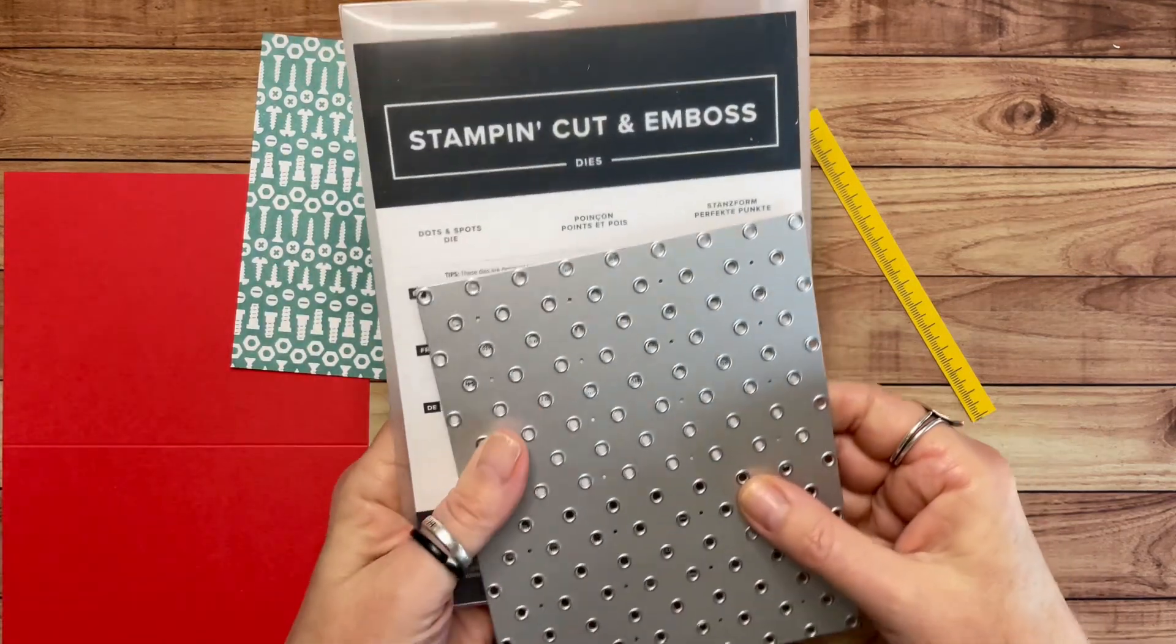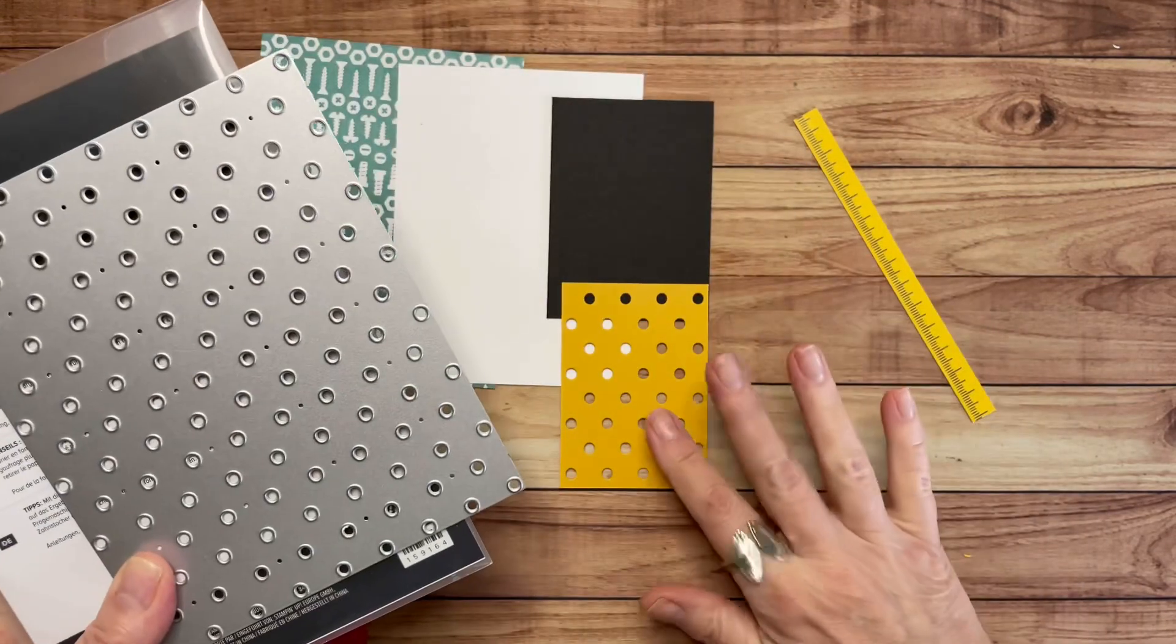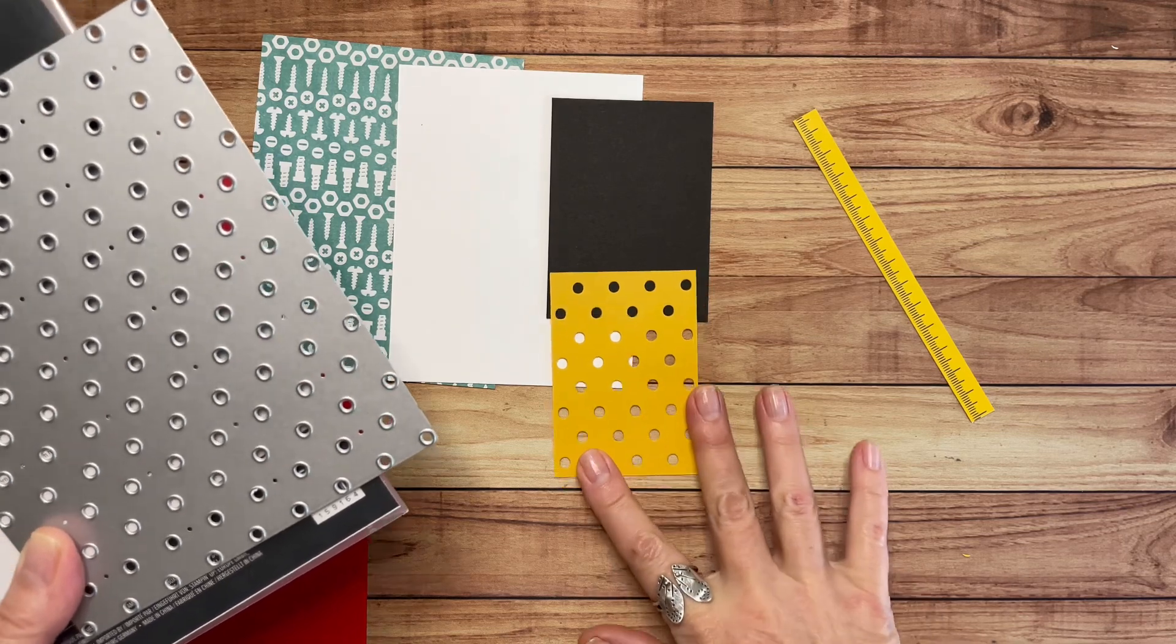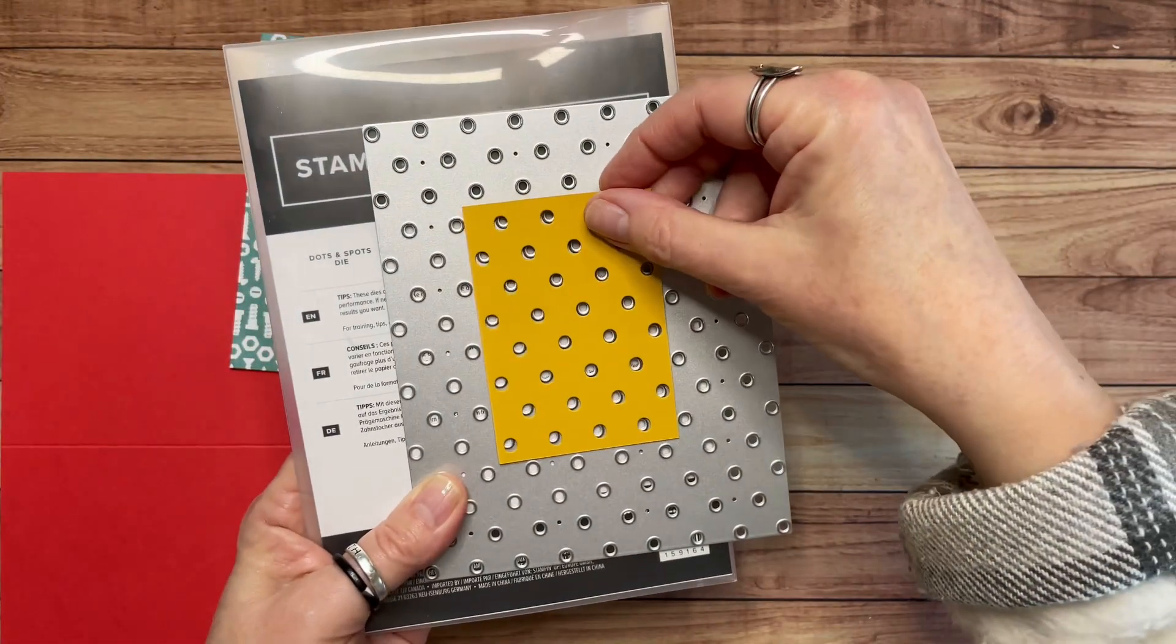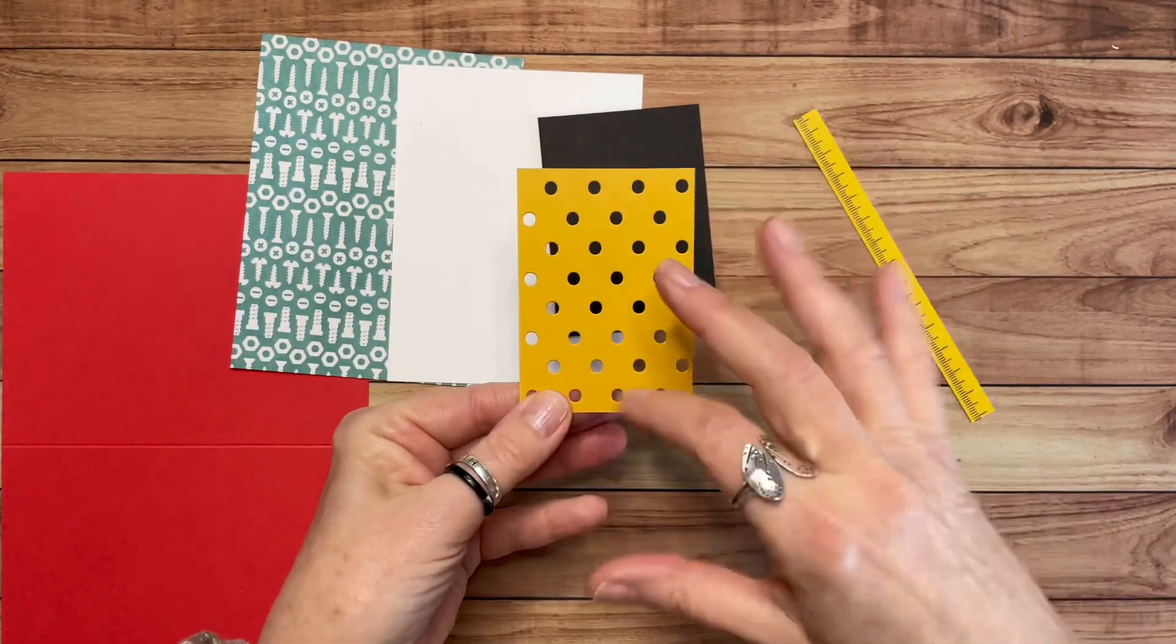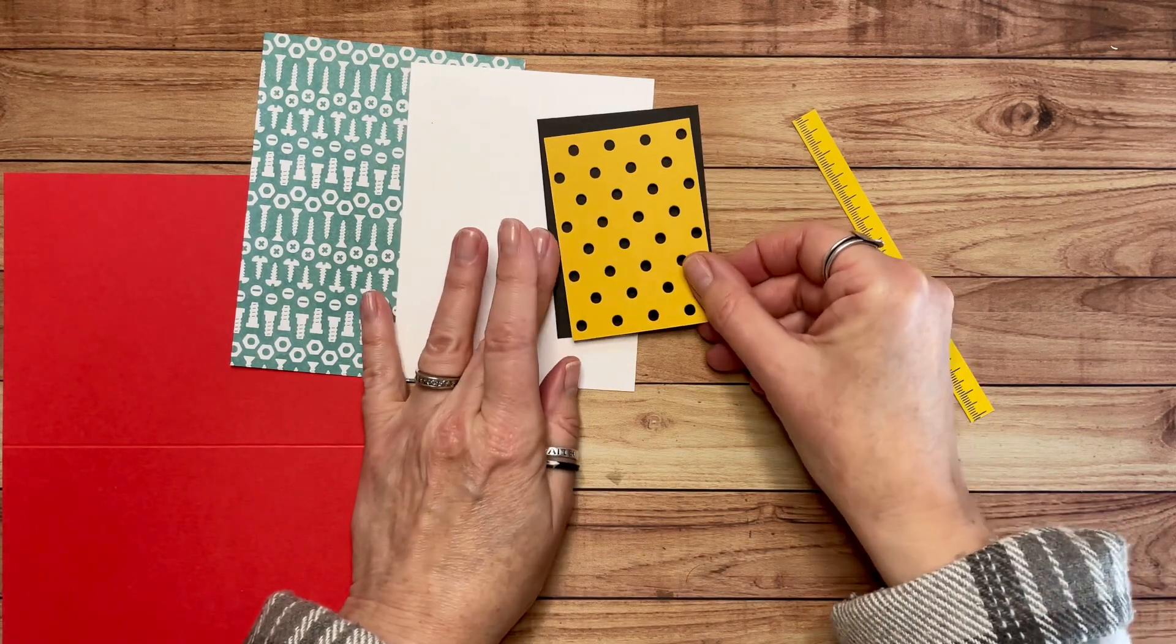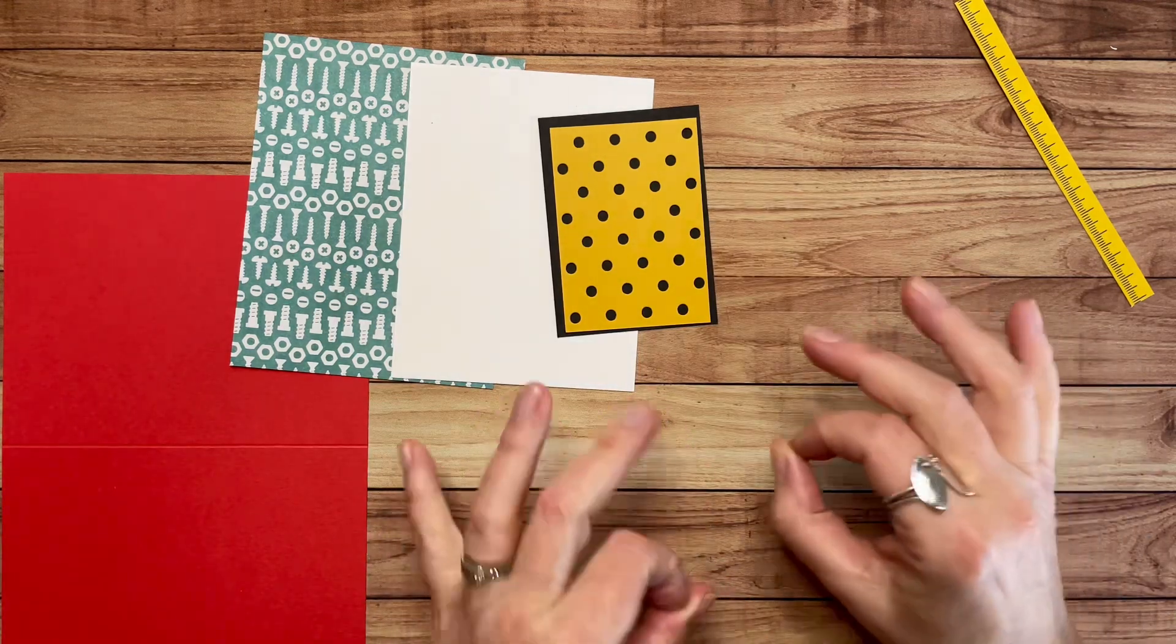Let's talk about this before we move on. I used a die called Dots and Spots, and I just ran this piece of Crushed Curry cardstock through my die cut machine. This is what it looks like when it comes out the other side. I cut this piece of cardstock specifically so it would fit right in here so I wouldn't end up with half circles on the edges, so all the circles would be contained inside the piece of cardstock. That may not matter to you, but I was being kind of persnickety about it, so I made sure that I cut my cardstock to the size that would fit.